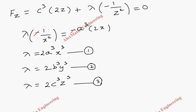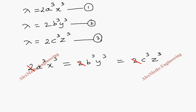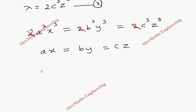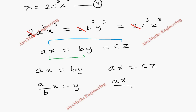Now we equate all three expressions since they all equal λ: 2a³x³ = 2b³y³ = 2c³z³. Canceling 2 everywhere and taking the cube root of each term, we get ax = by = cz. Taking the first and second: ax = by, so y = (a/b)x. Taking the first and third: ax = cz, so z = (a/c)x. We now have y and z in terms of x.